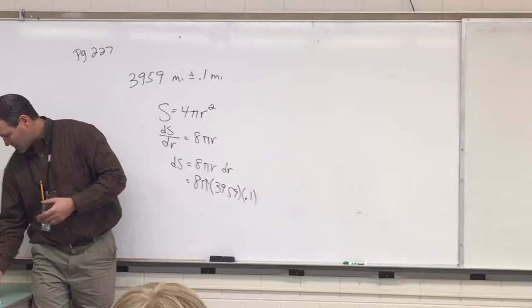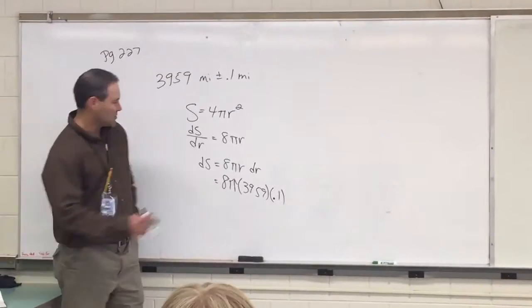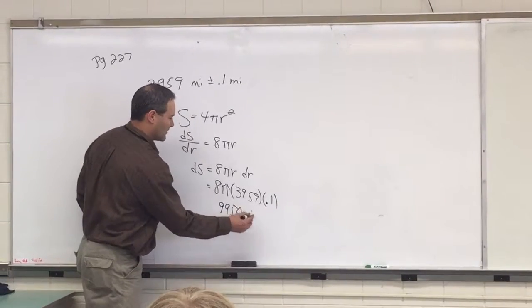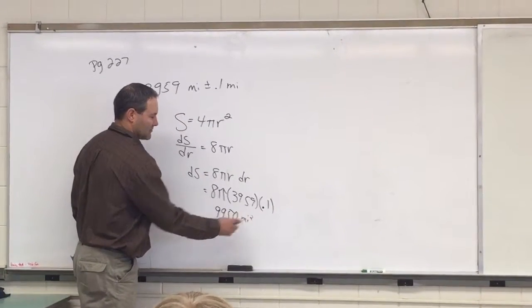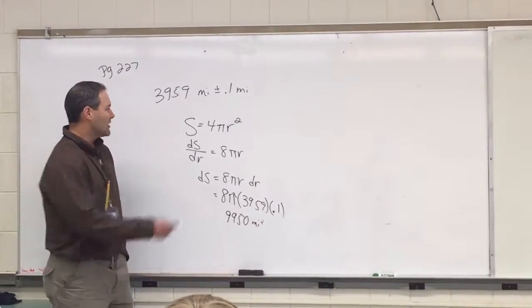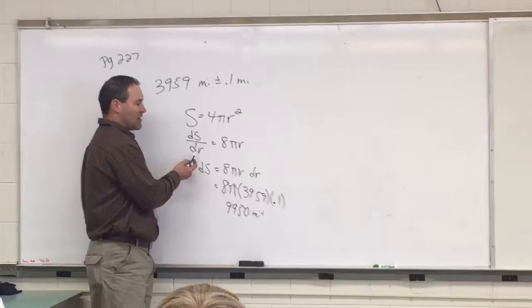So then the book tells us that it is 9,950 miles squared. Should we trust the book? Um, yeah. Because I don't want to do that. Okay, so this is an estimate. The dS is an estimate. The dr is an estimate.